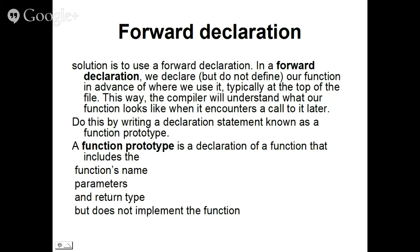So you are basically telling the compiler that look, there is something called as add of this type, this name, this return type, this argument, and you will find the definition somewhere later. So that is called forward declaration. We will see how we do it.